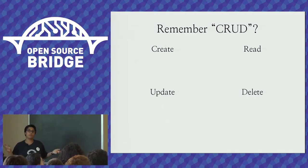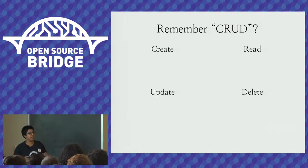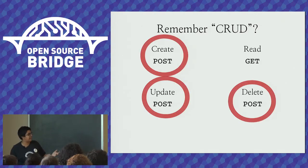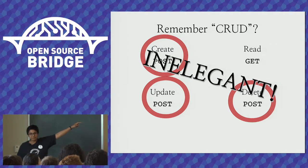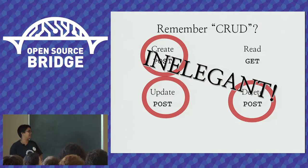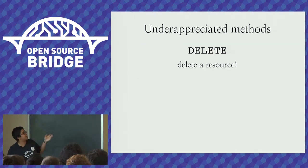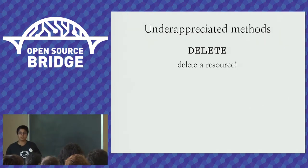Perhaps some of you remember the phrase CRUD — the four main things you might want to do with data: Create, Read, Update, and Delete. If you're using only GET and POST, you'll notice that three of those operations map to the same method, which I find inelegant. It's nonsensical to POST in order to delete something. But there is an HTTP method called DELETE — it's in the spec, it's in the RFC. You can delete a document, an image, a resource.